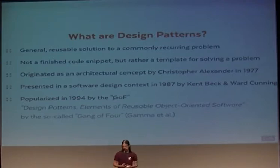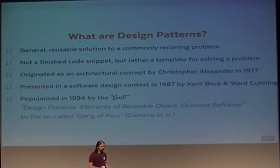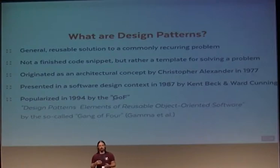Design patterns are not finished code snippets — you cannot just copy and paste them. They are more like a template with steps for how to solve the problem, but you still need to produce the actual code. They started as a concept in architecture, but were transformed into a software design concept. The book that started it all in software engineering was published in 1994 — it's called the Gang of Four book, written by four authors, titled Design Patterns: Elements of Reusable Object-Oriented Software.